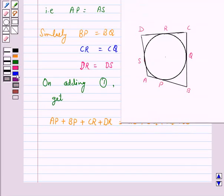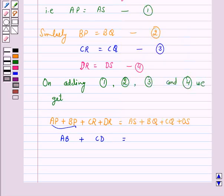Now AP plus BP is AB, plus CR plus DR is CD. And this is equal to AS plus DS is AD, and BQ plus CQ is BC.